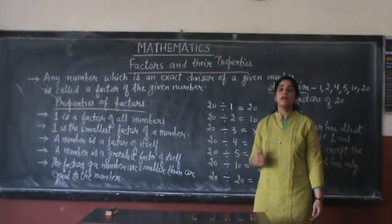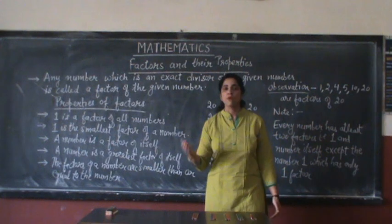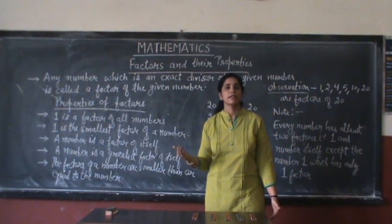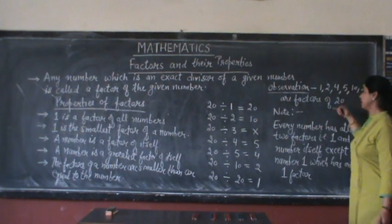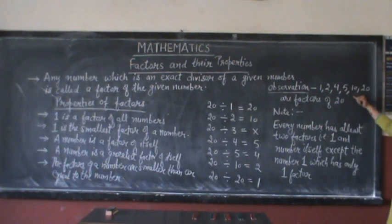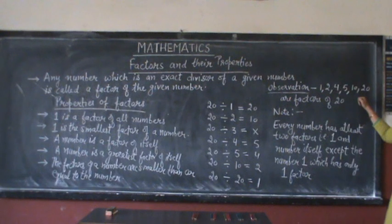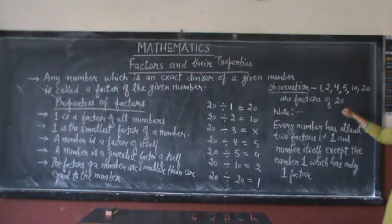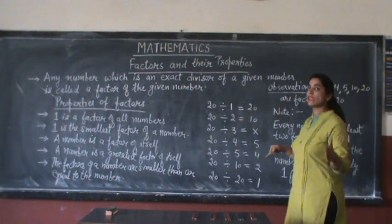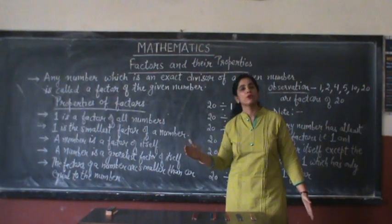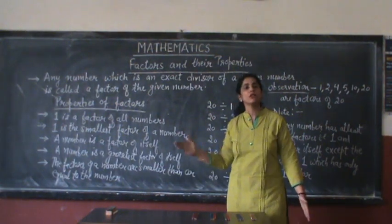The next property is: a factor of a number is either smaller than or equal to the given number. You can observe that 1, 2, 4, 5, and 10 are smaller than 20, so these are the smaller factors of 20. But 20 is also a factor of 20, and 20 equals 20, so a factor could be either smaller than or equal to the number.